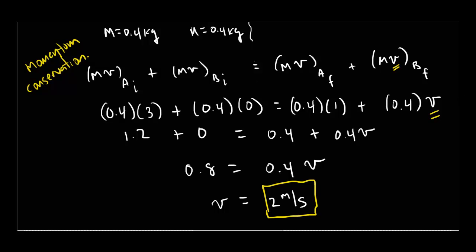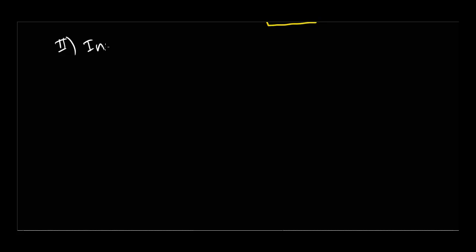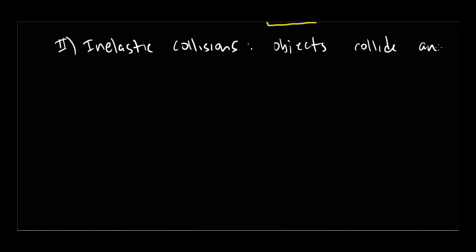Now let's move on to the second type of collision — inelastic collisions. If an elastic collision is when objects bounce off one another without changing shape, this is exactly the opposite. In an inelastic collision, two objects collide and stick together, becoming essentially a single object.